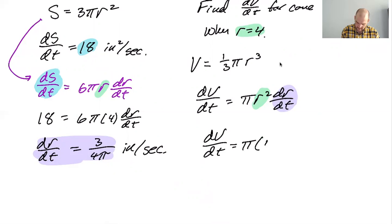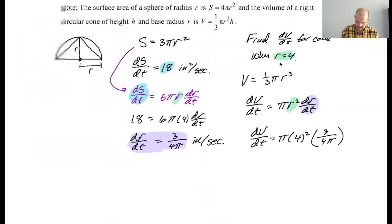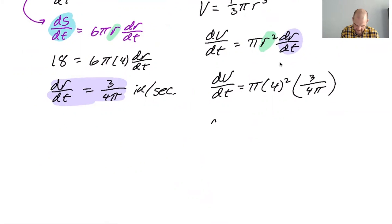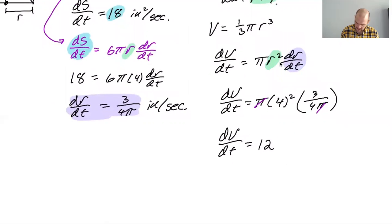dV/dt is going to be π times 4² times 3 over 4π. The π's cancel, then you get 4² and 4 - 4 and 4² is just 4, and then times 3 - I think you just get 12. 12 cubic inches per second.